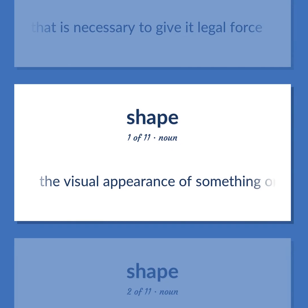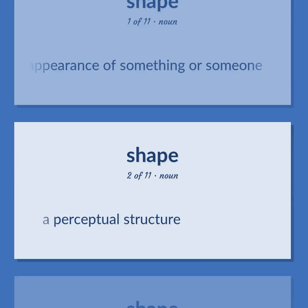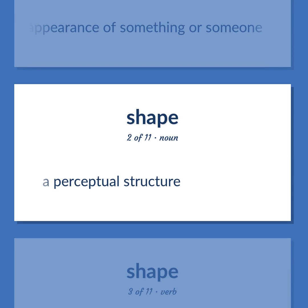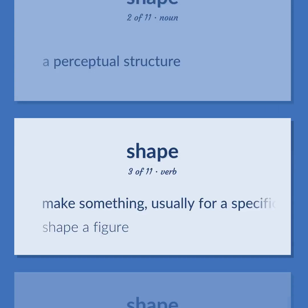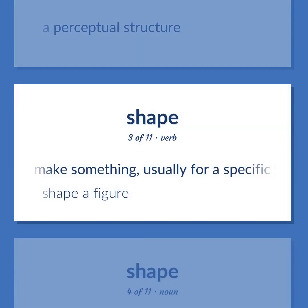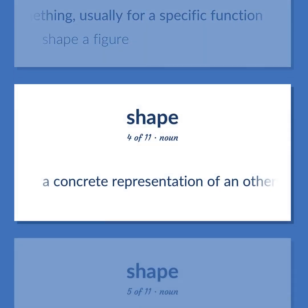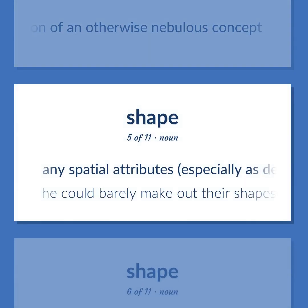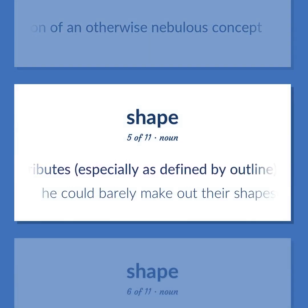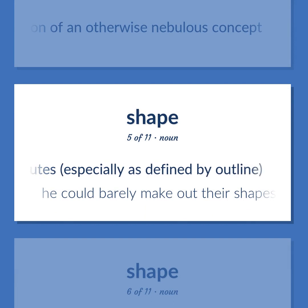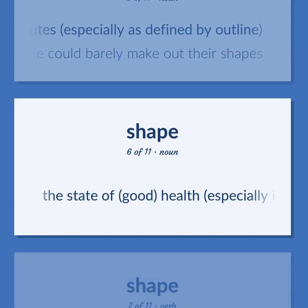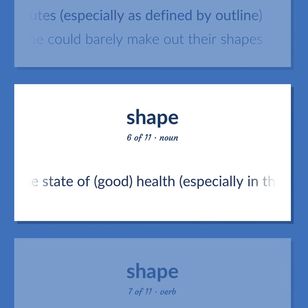Shape: the visual appearance of something or someone. A perceptual structure. Make something, usually for a specific function; shape a figure. A concrete representation of an otherwise nebulous concept. Any spatial attributes, especially as defined by outline — 'He could barely make out their shapes.' The state of good health.